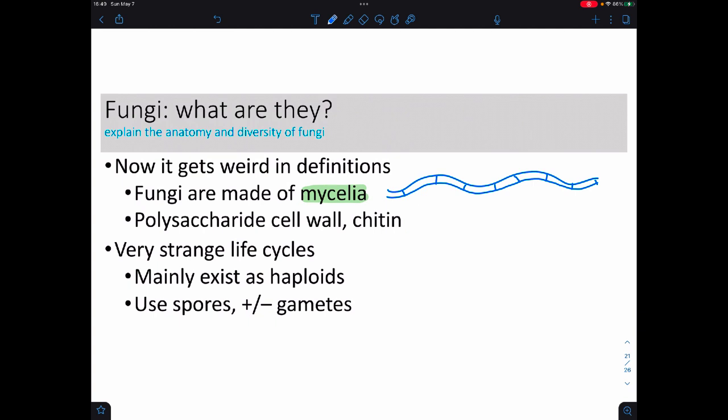The fungi are the weirdos because now we have to start having some definitions. When we define fungi, what we say is they're made out of this stuff called mycelia, which are these long chains of fungal cells. Some of them are totally separate like I have it drawn, and others actually have a thin little connecting line between them all—so it's called non-septate and whatever. They turn out to have polysaccharide cell walls and they use chitin. They have very strange life cycles; they tend to be very complex. So if you thought the life cycle for plasmodium—the causative agent of malaria—looks weird, like it gets worse with fungi. They primarily exist as haploids and they only become diploid when it's time to reproduce.